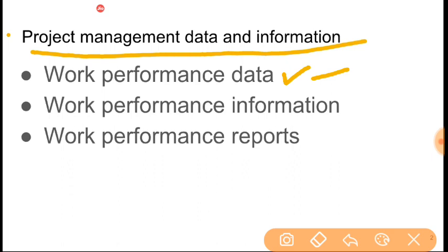Then comes work performance information. This is a kind of intermediate level. For example, schedule variance is plan value minus earned value — how much work we were supposed to complete minus how much we actually completed. Cost variance is earned value minus actual cost — how much we completed and for that, how much did it cost us.